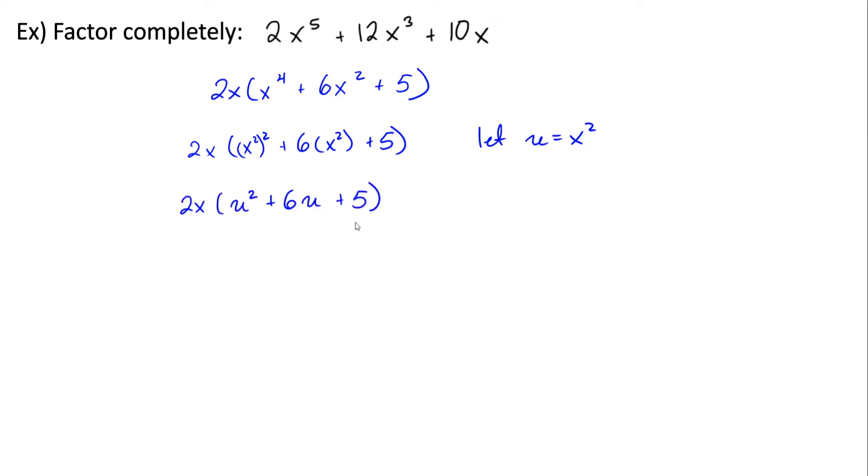Now over here we can factor using AC. Here a is 1, b is 6, c is 5. So we need two factors of positive 5 that add to positive 6. And that's easy, that's going to be 1 and 5.